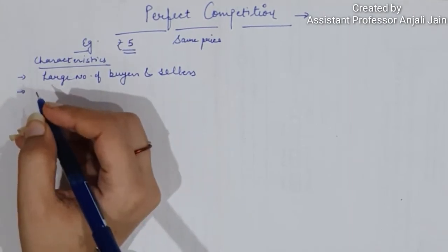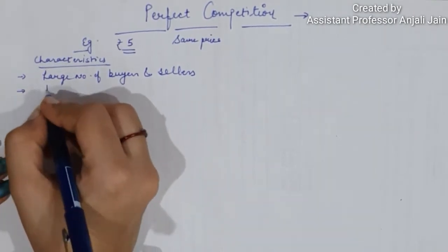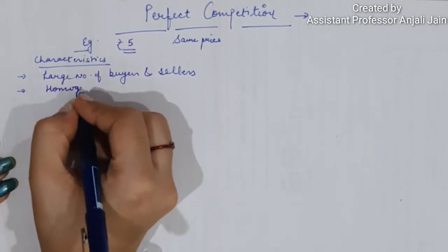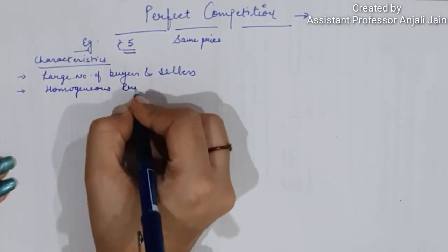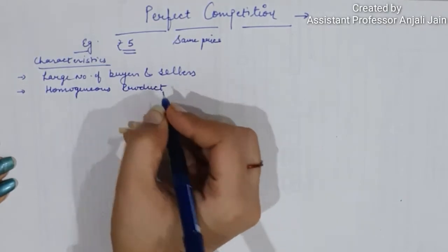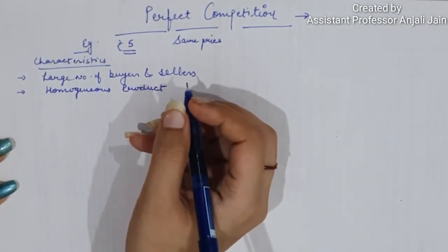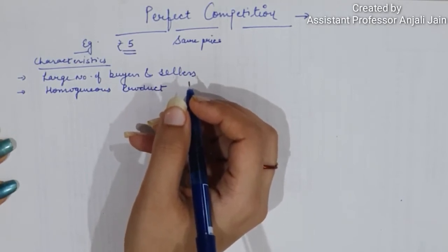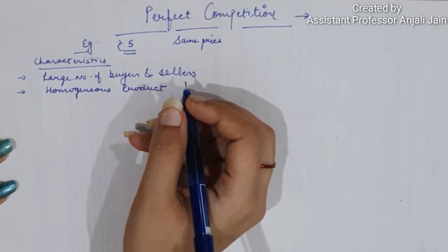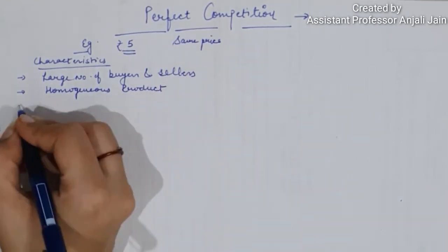Next comes homogeneous product. In this market, the product is homogeneous and the price charged by all sellers is almost the same. For example, if we talk about the grain market — rice, pulses, or wheat — the product is almost the same across all sellers.